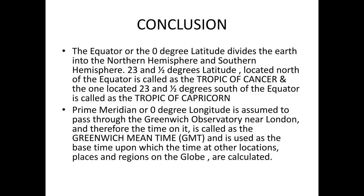The prime meridian, also known as the zero degree longitude, is assumed to pass through the Greenwich Observatory near London. Therefore, the time on it is called Greenwich Mean Time, and it is used as the basis time upon which the time at other locations, places, or regions of the world are assessed, determined, and calculated. Thank you.